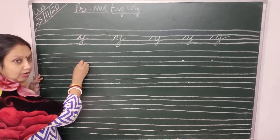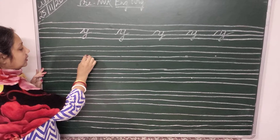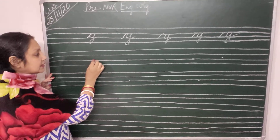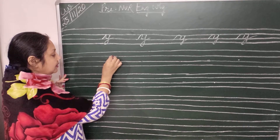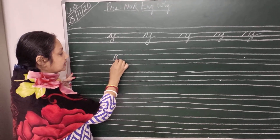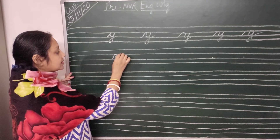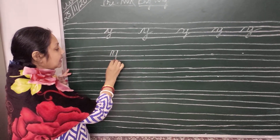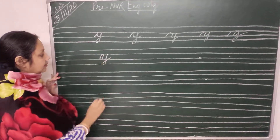So children, here is the dot. You start from the third line, then go up to the second line, then come down to the third line, then again go up to the second line, come down to the third line and just give a curve.